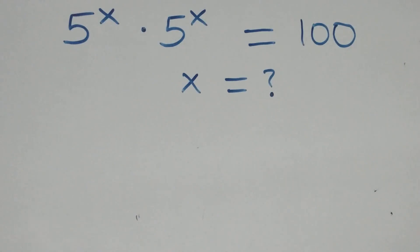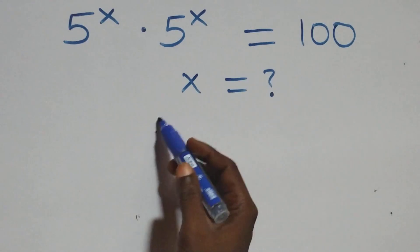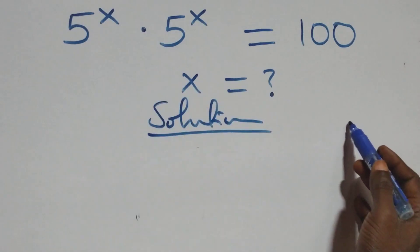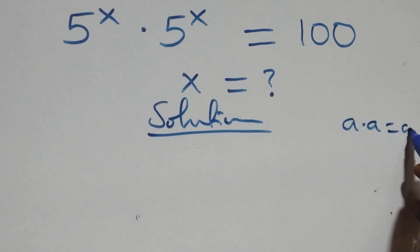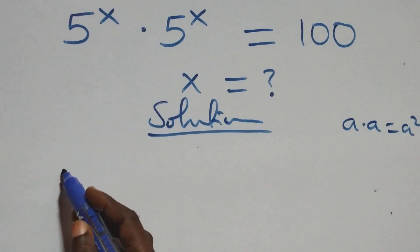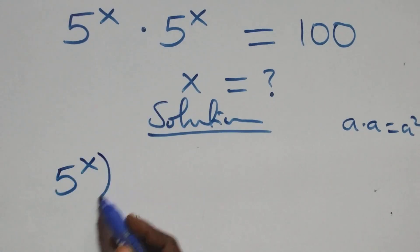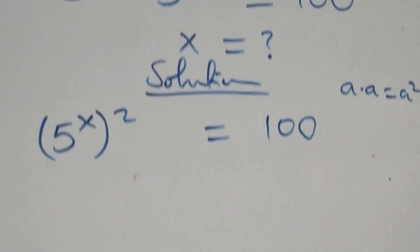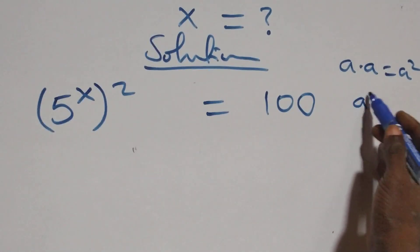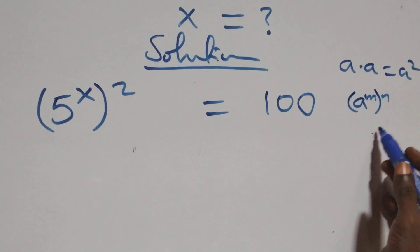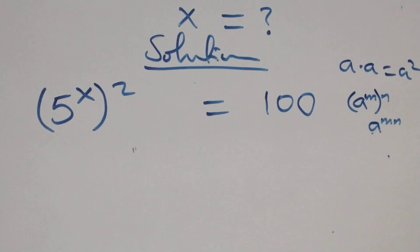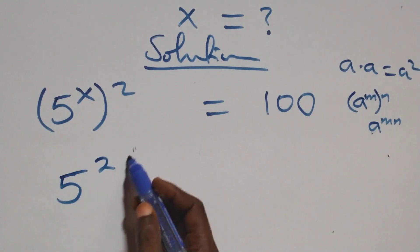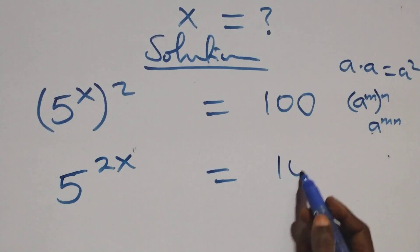Hello, you're welcome. How to solve this nice exponential equation. What we have here follows when we have a times a, which is the same thing as a squared. This same thing multiplying can be written as 5 raised to power x squared, which equals the right-hand side. This also follows: a raised to power m, raised to power m, is the same as a raised to power m times m, so the power multiplies and we have 5 raised to power 2x equals the right-hand side.